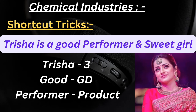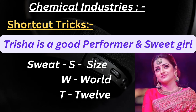The next shortcut is: 'Trisha is a good performer and she is a sweet girl.' Here TRI represents 3, meaning 3 percentage. 'Good performer' - G, O, D represents GDP. So chemical industry contributes 3% of GDP. 'Sweet girl' - S stands for size, W stands for world, T stands for 12th. Chemical industries occupy 12th place in the world in terms of size.